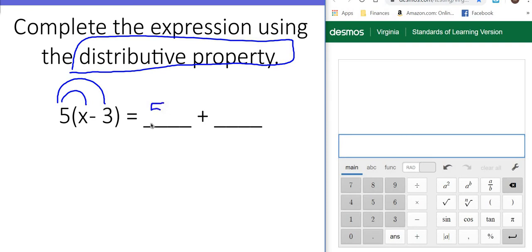5 times x is 5x, and 5 times a negative 3 is negative 15. You have to be very careful because that negative moves with that 3.